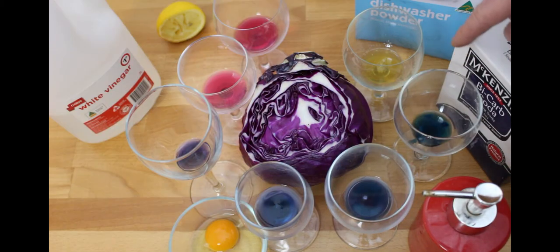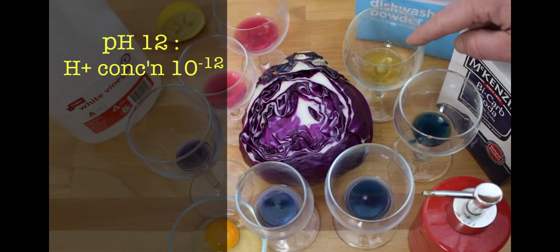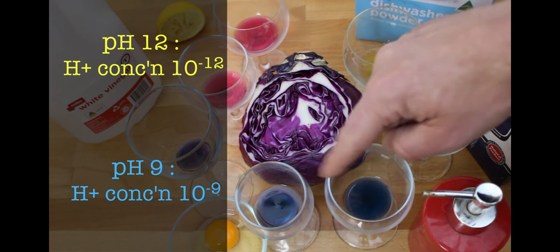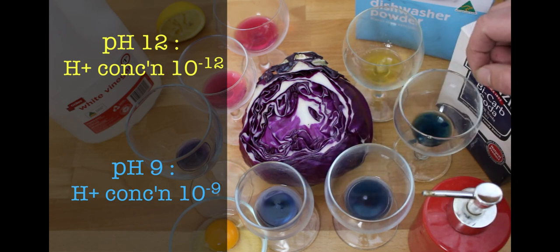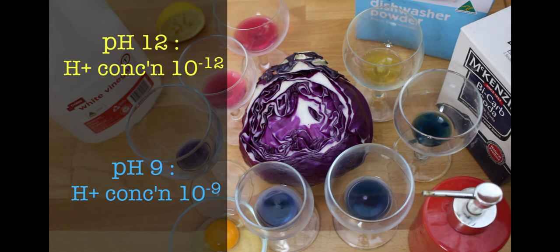The dishwashing powder is about pH of 12. That means it's got not much H+, which is the acidic component, has lots of OH- hydroxide. So pH 12 to pH 9, which is these ones, that's a pH jump of three, so that means that it's got 10 to the 3 times more acid, more H+ in it—so a thousand times more acid.